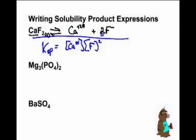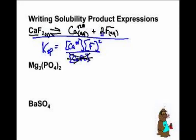You have to square the fluoride because of the coefficient of two. Now the expression has no denominator — products over reactants, but the solid gets no denominator because it's a solid. We are only concerned with things that are aqueous. This is called homogeneous equilibrium — you must have the same state of matter. Since charges imply aqueous, solids get ignored. So these Ksp expressions are actually easier because you don't have a substance on the bottom.